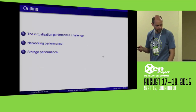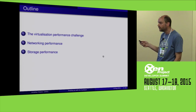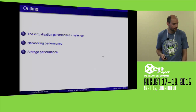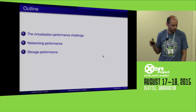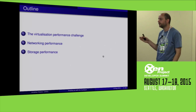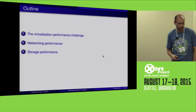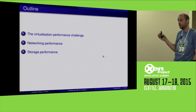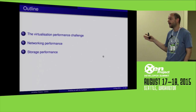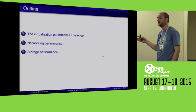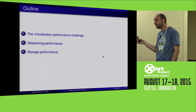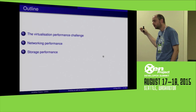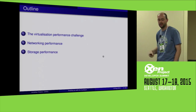I'm going to start by briefly talking about the challenge that we face with para-virtualized IO performance. The bulk of the talk I'll be talking about networking and then storage performance. In both cases I'll be giving some measurements of where we stand now, talking about some recent developments performance-wise, and what we're going to do in the future to get to where we need to be.